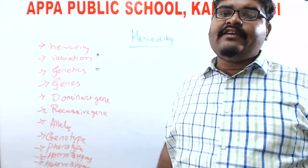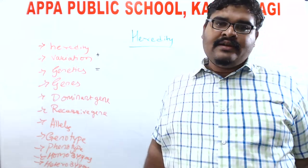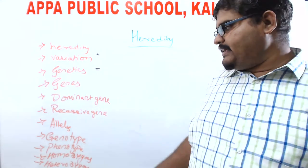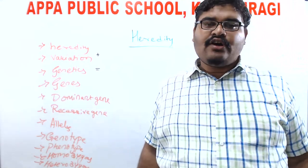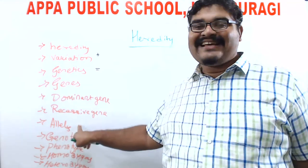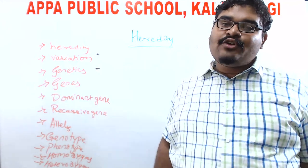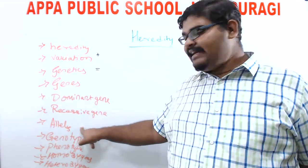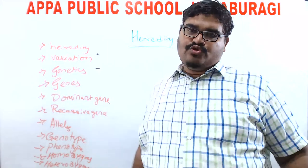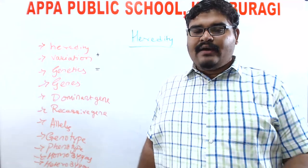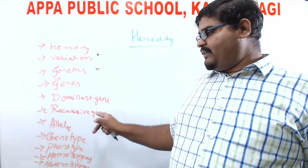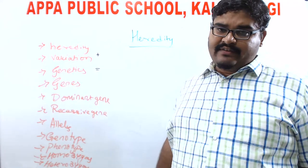Before dealing with dominant gene and recessive gene, let me tell you about the types of genes. For every character among an organism, we have two genes. Genes are also called alleles — alleles are alternative forms of genes. For every character, you have two genes: one among them is dominant, and the other one is recessive.